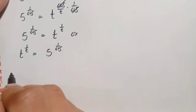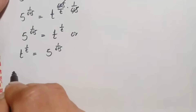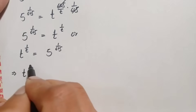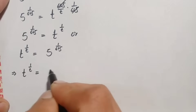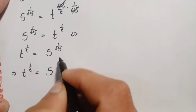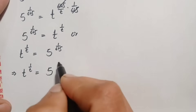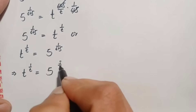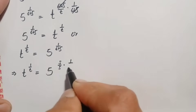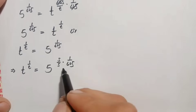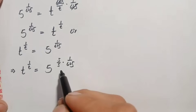On the right-hand side we have 5 in the base and 625 in the denominator of the power. To match the structure x raised to power 1 by x, we will multiply and divide by 5 in the exponent on the right-hand side. So this equation becomes t raised to power 1 by t is equal to 5 raised to power 5 over 625 times 1 by 5.